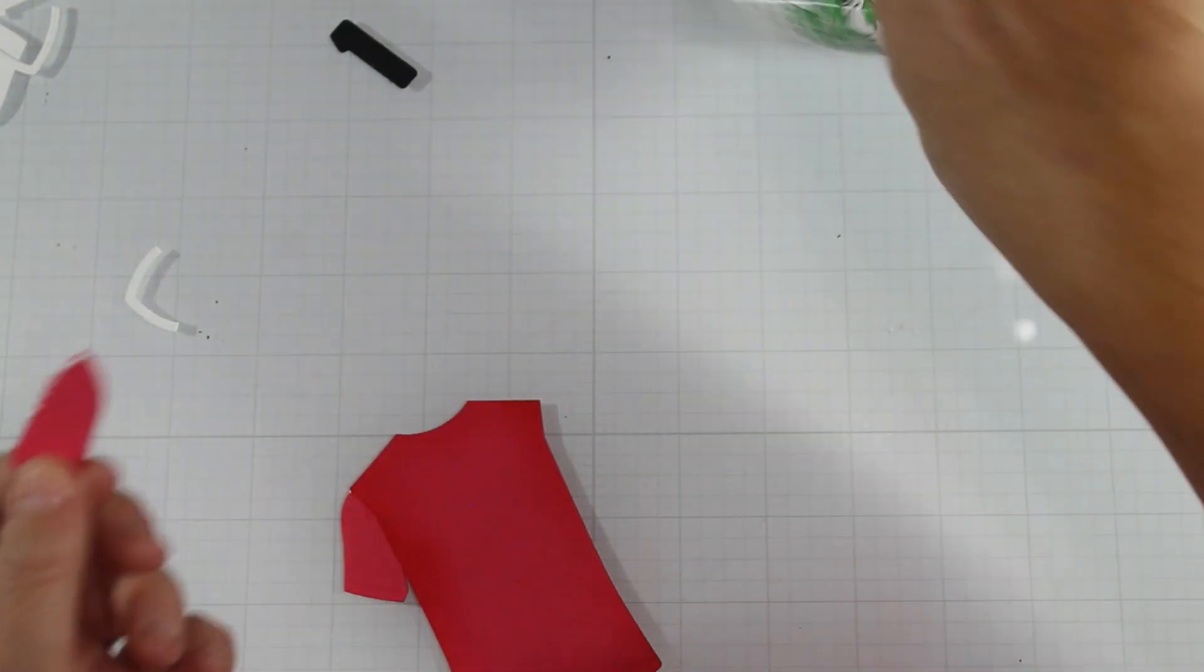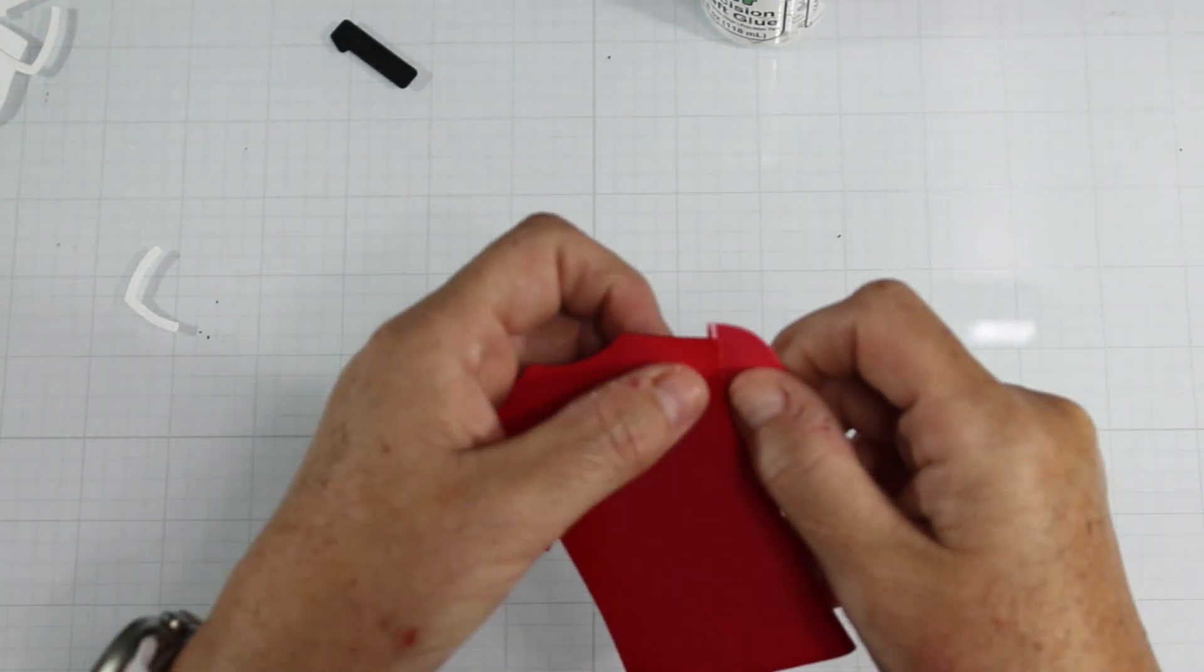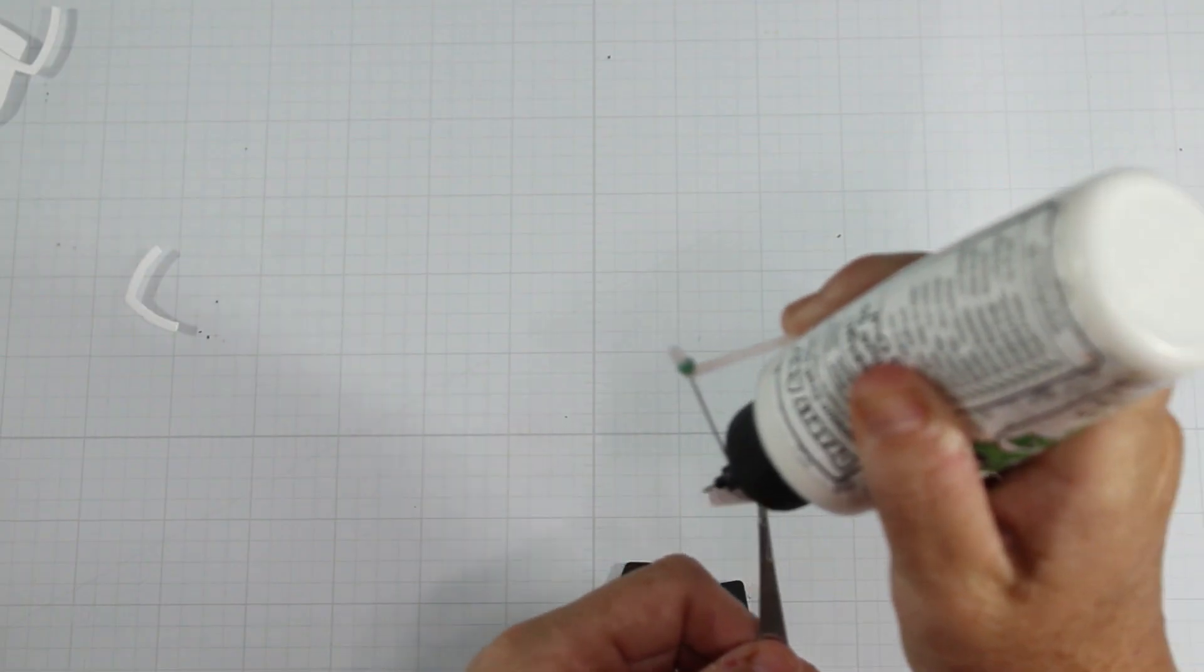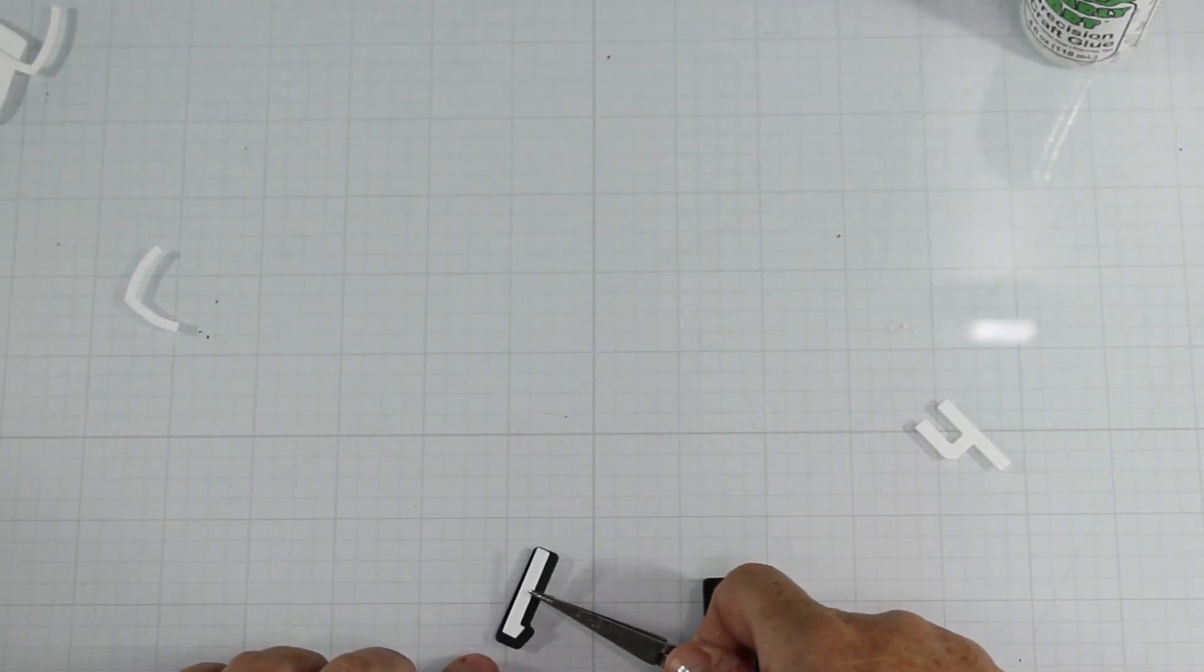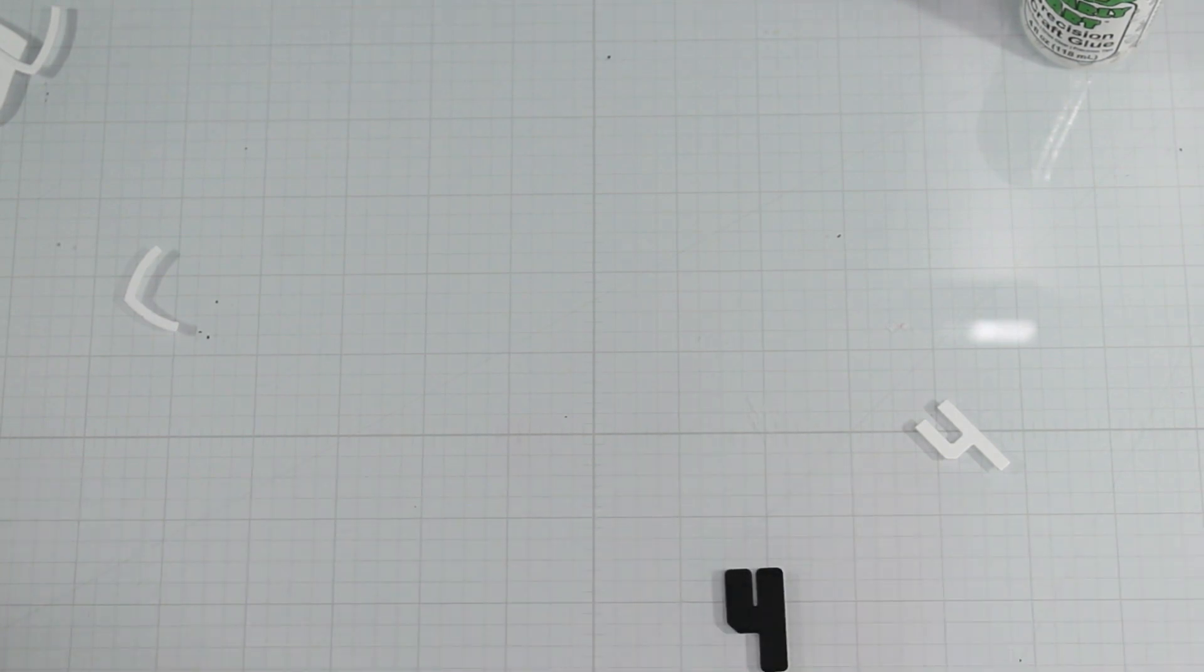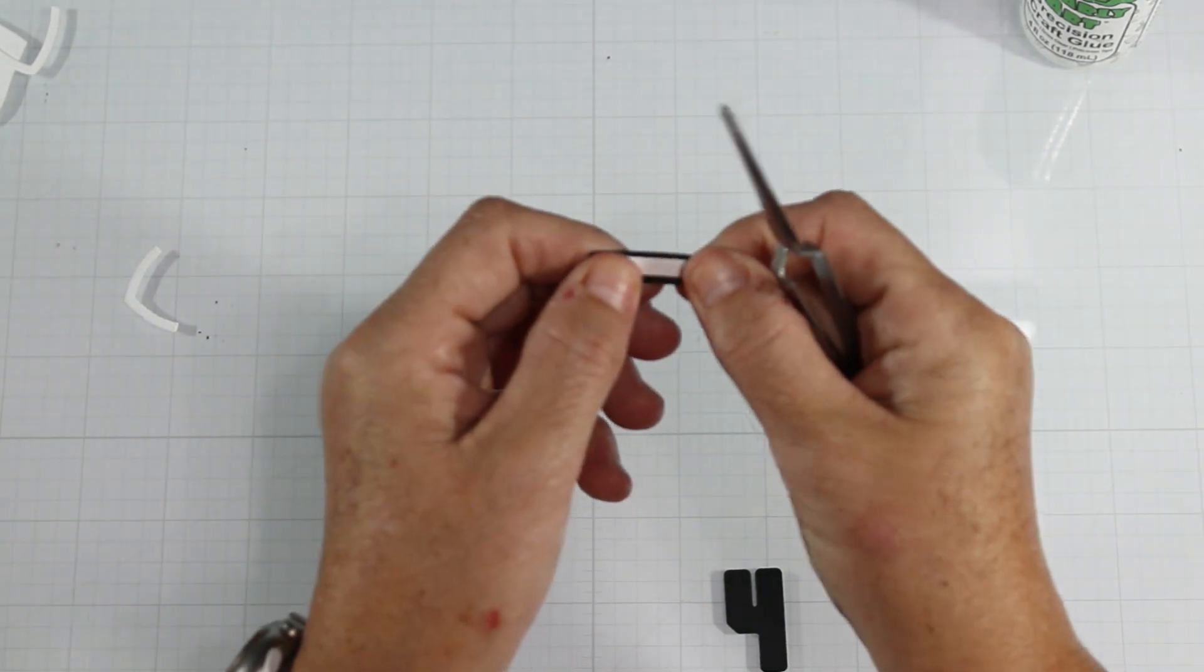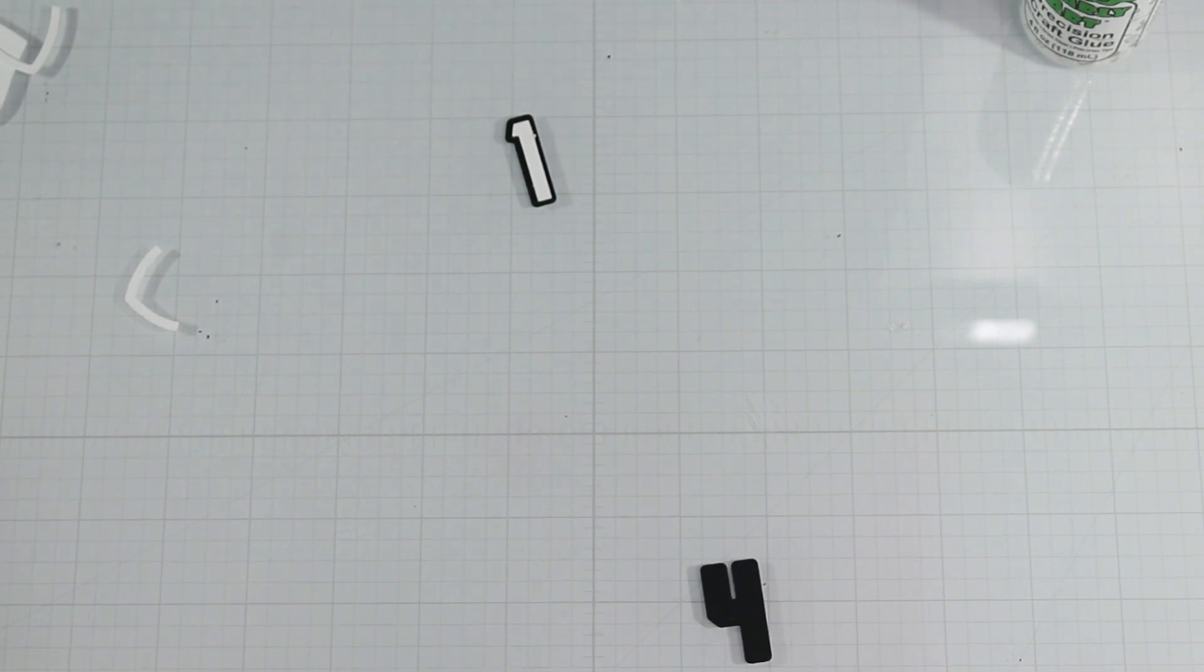But because my son's jersey was all red, that's what we're going with. I did leave the sleeves uninked because I thought that would give it just a little bit more of a contrast. His number was lucky number 14, so I die cut the shadow layer in black and then the solid numbers in white just to create some contrast and some dimension on the jersey.